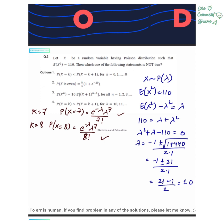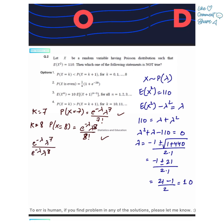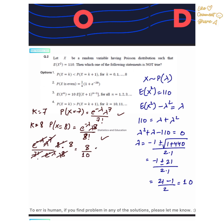Let's check the first statement. Let k equals 7, so P(X=7) equals e to the power minus lambda times lambda to the power 7 upon 7 factorial, and P(X=8) equals e to the power minus lambda times lambda to the power 8 upon 8 factorial. Taking the ratio of both probabilities, since this ratio is less than 1, the first statement is true.